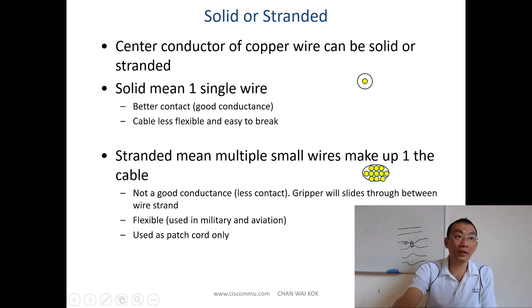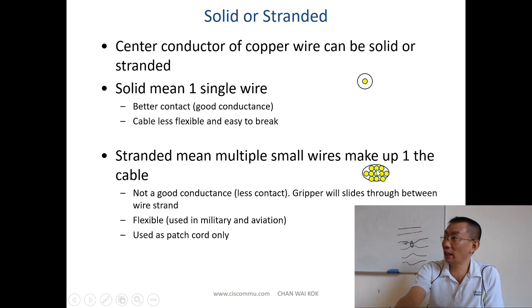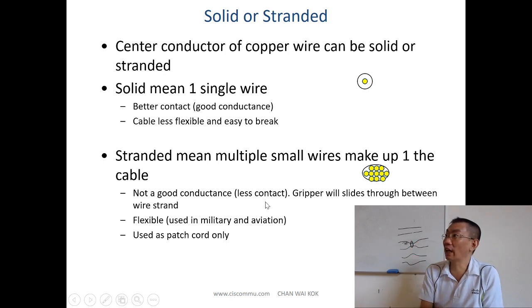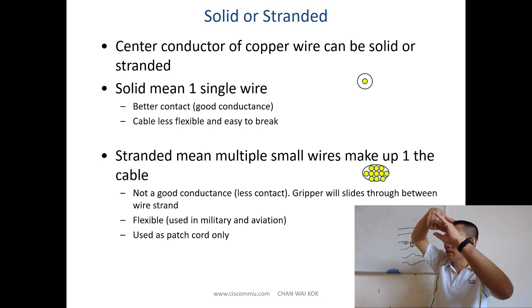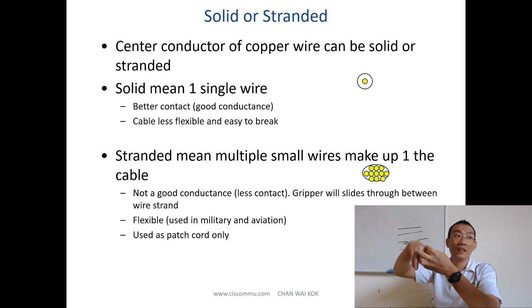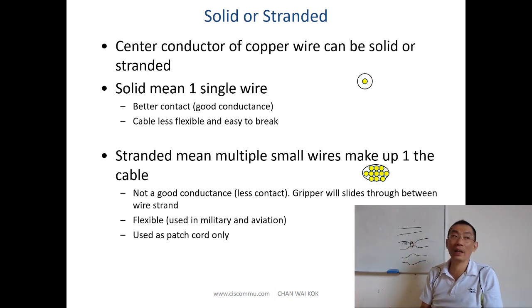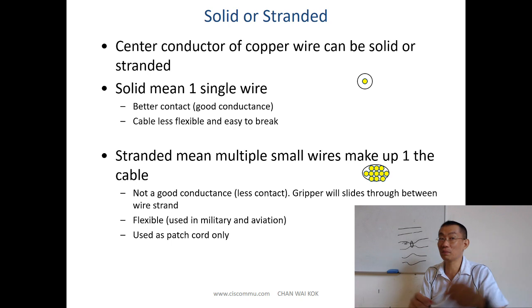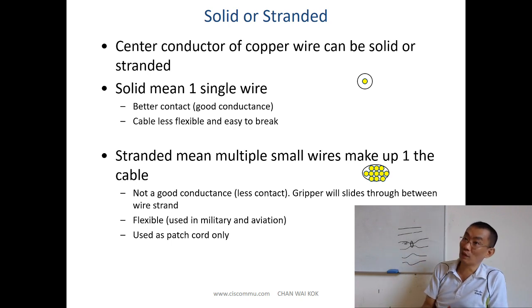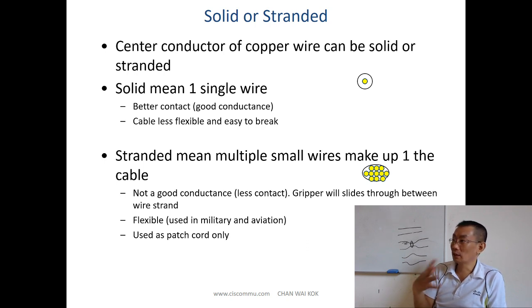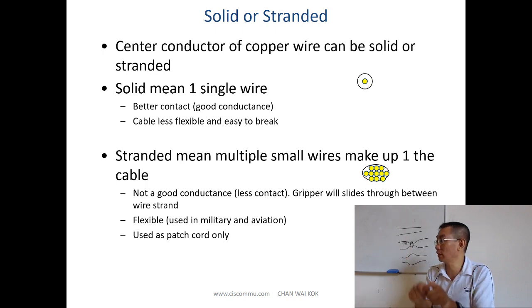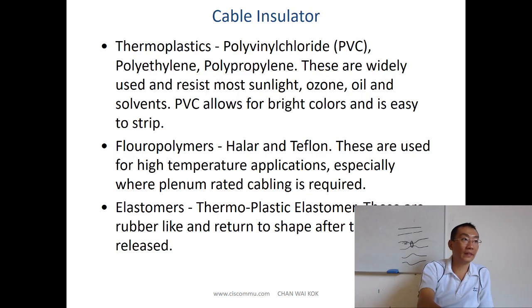A stranded cable has many small wires bundled together to form one cable. This means less conductivity because contact is not as good, but the cable is much more flexible — good for patch cords, since you can bend it. It's made of maybe 20 small wires, so the contact is not as good, but the cable is flexible and not easy to break.